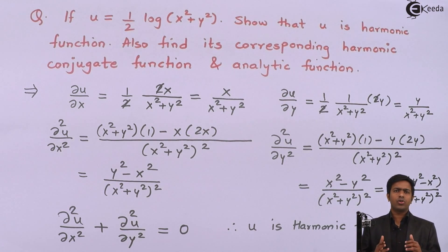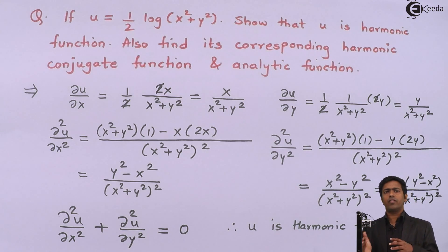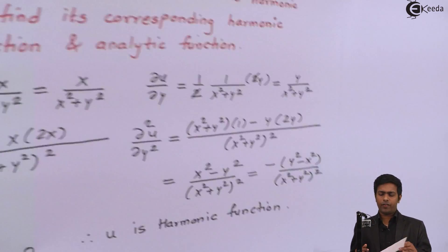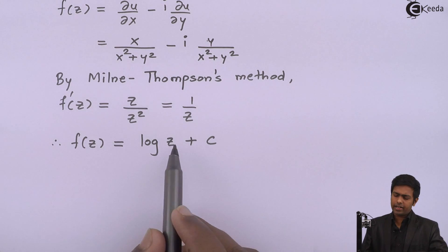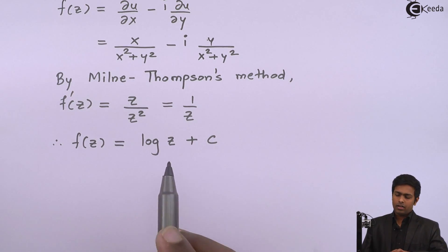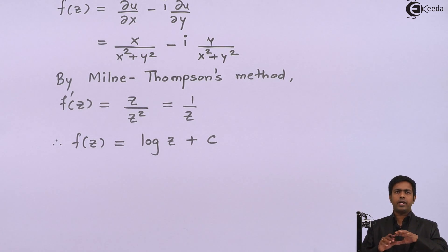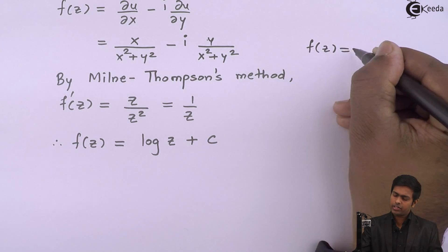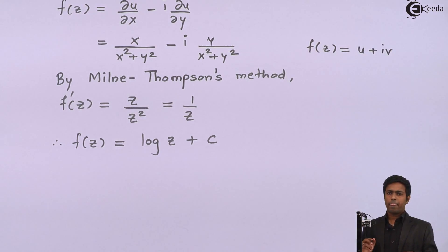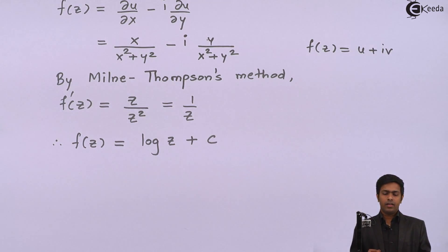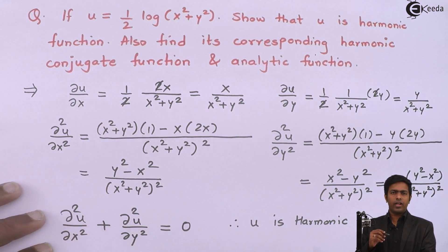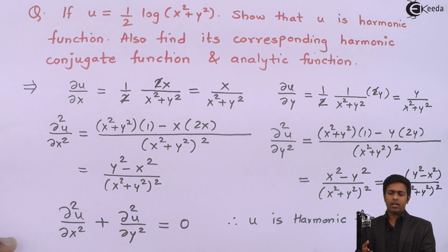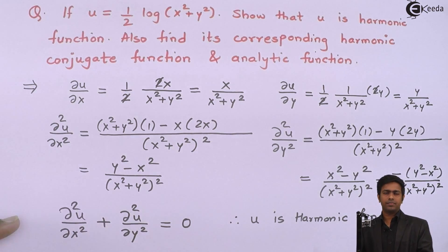Now we know that the harmonic conjugate of u is v. Since we have f(z) and u, we can find v. We convert f(z) back in terms of x and y and separate the real and imaginary parts, where the real part is u and the imaginary part is v, which is the required harmonic conjugate.